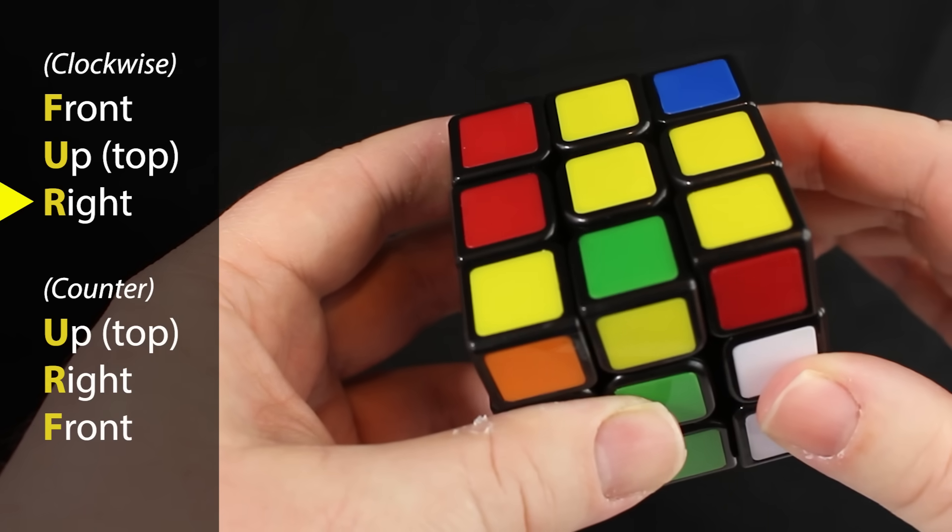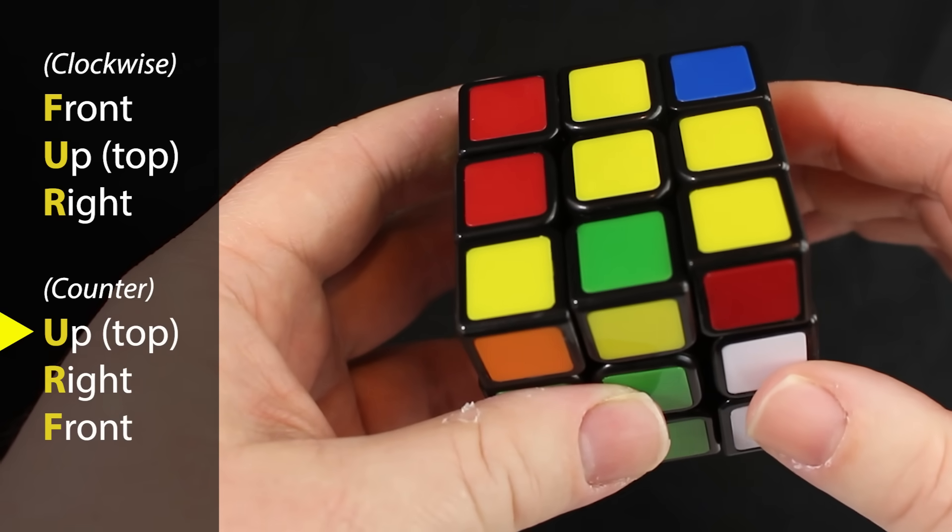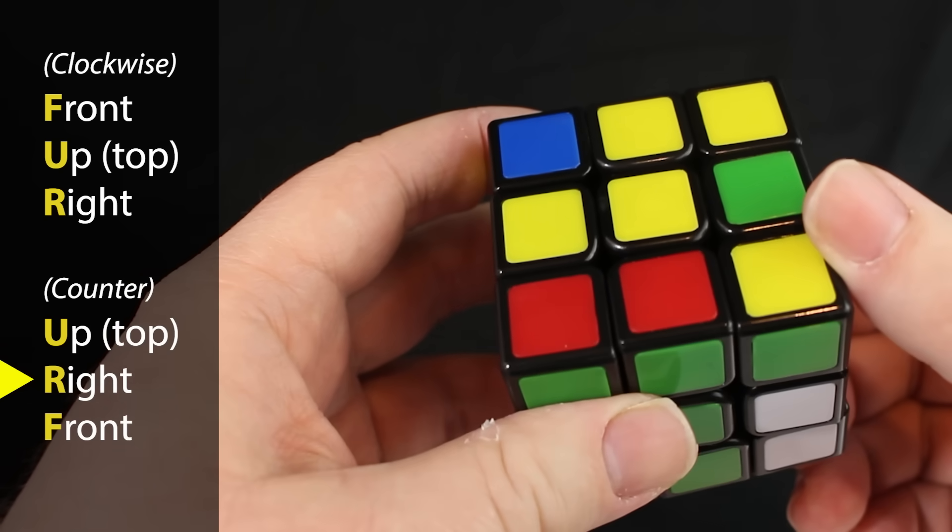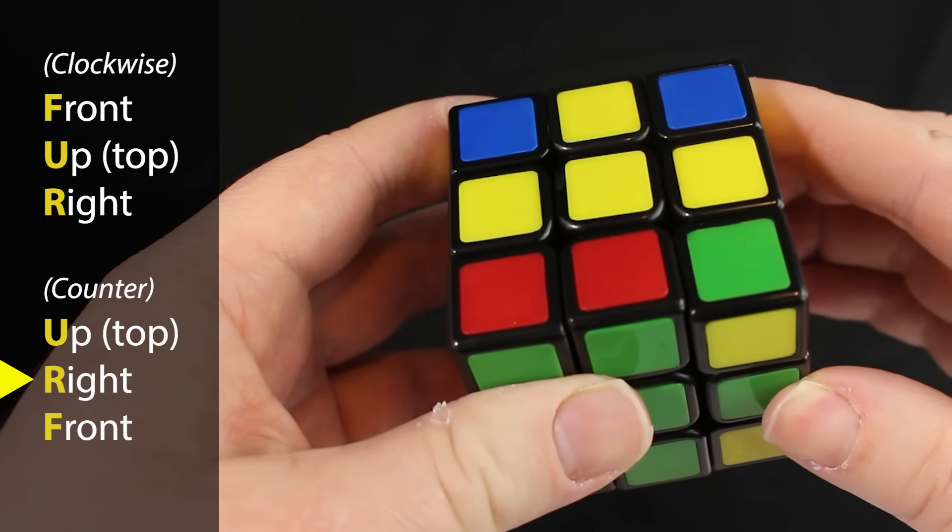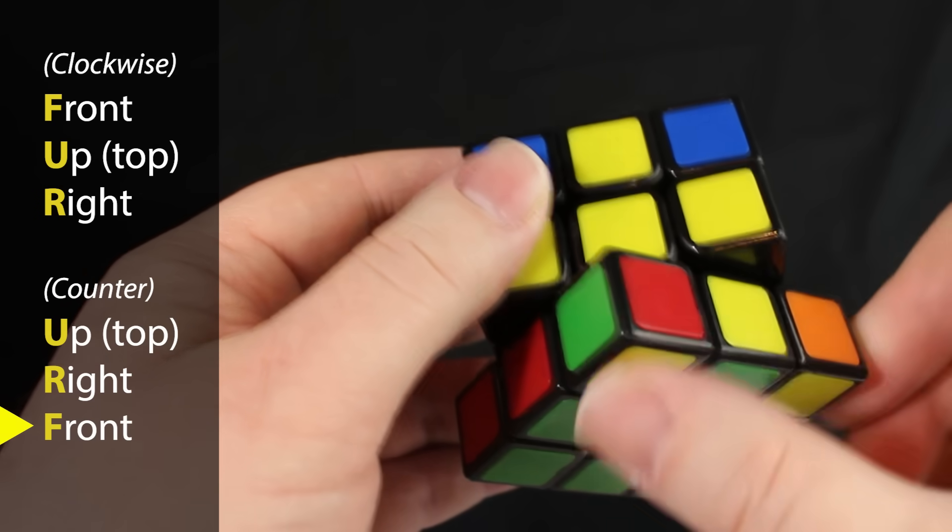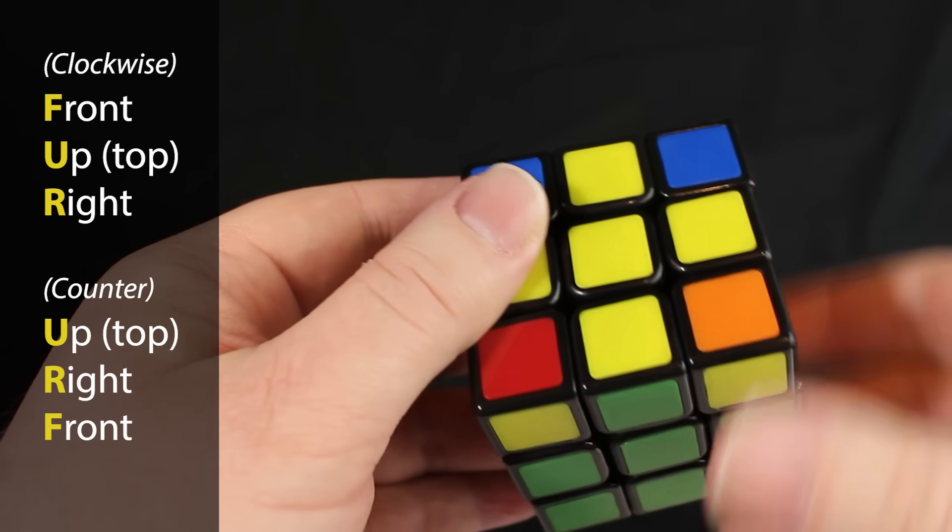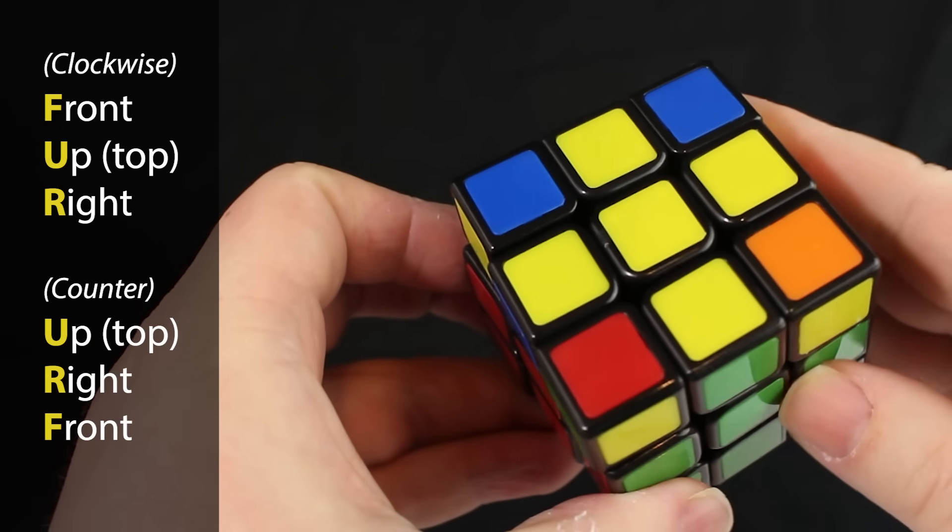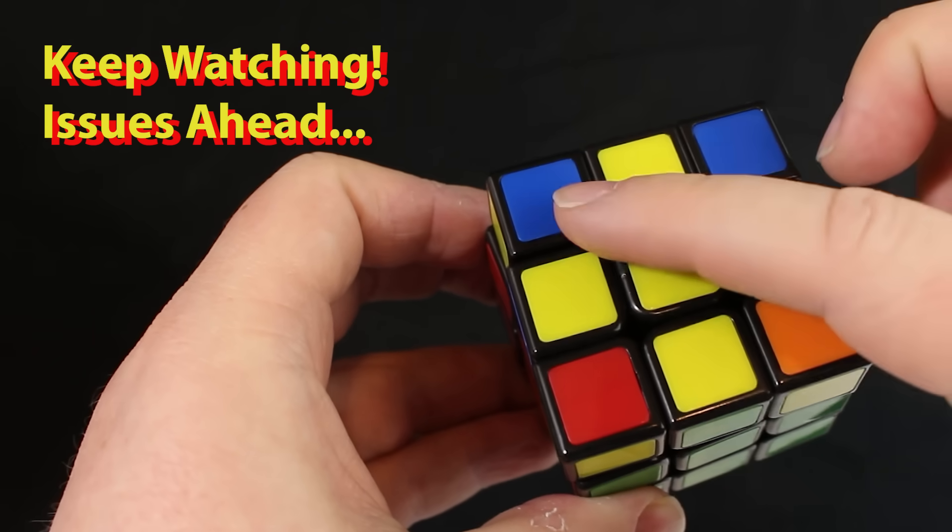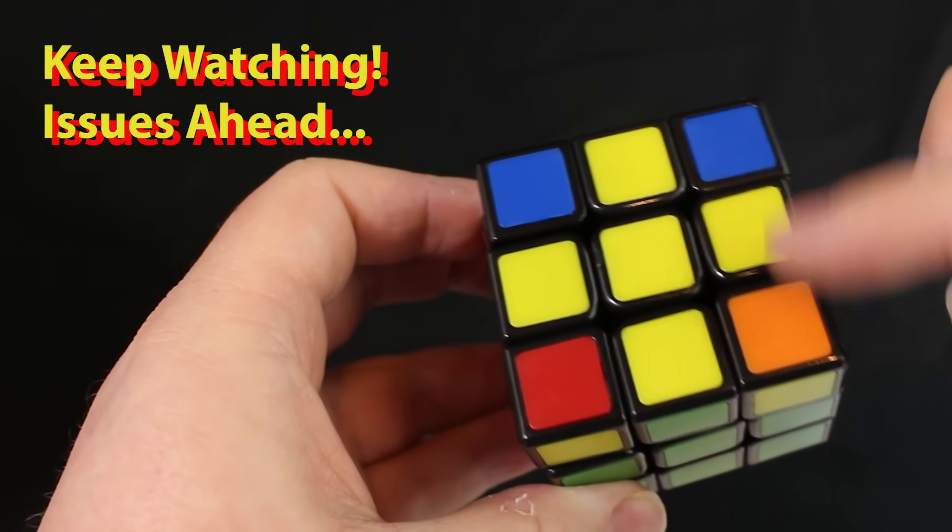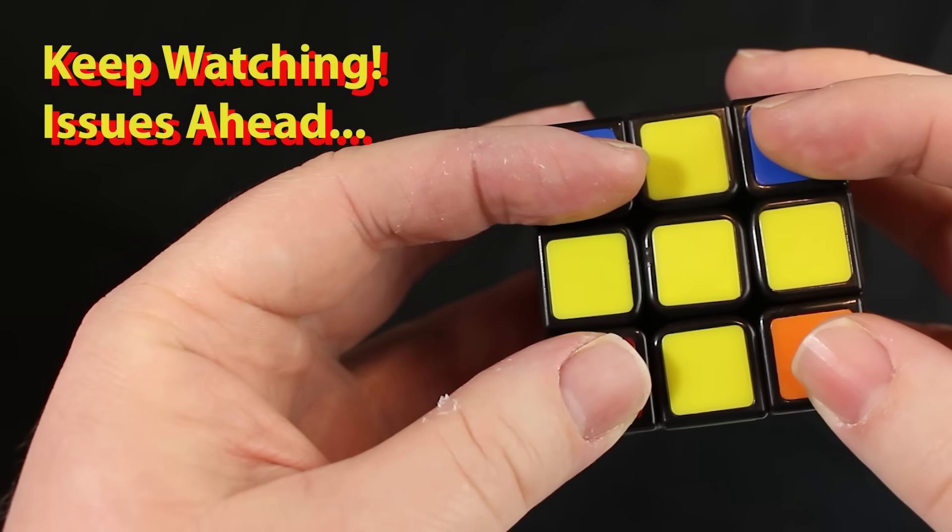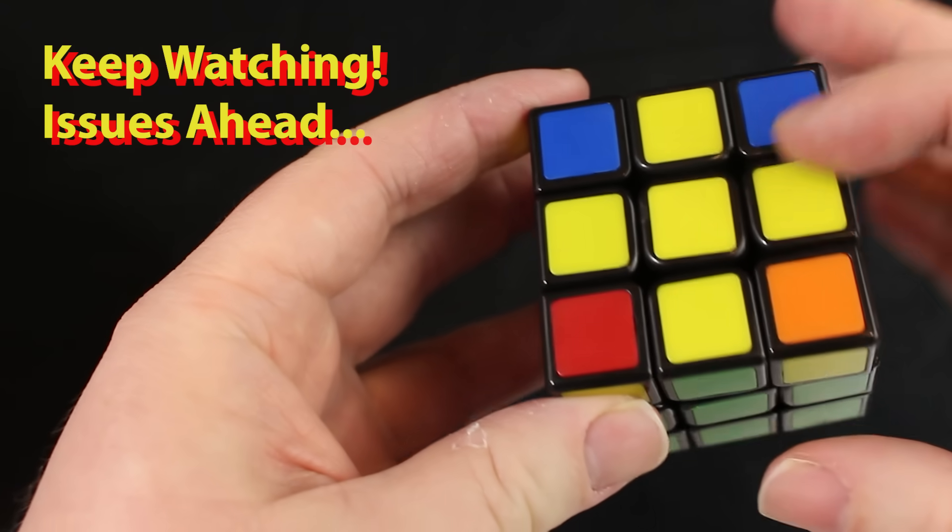Moving that clockwise. Then we do the counterclockwise: the up, then the right side going counter, and then the front going counter. You can see here I got the plus. I call this the clean plus because there's no yellows on the corners. But it's okay if you get a yellow or two on the sides, that's fine too. But it's not always going to be this easy. So let me show you some things that could happen here.